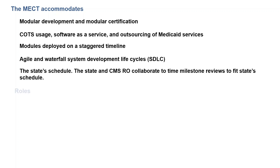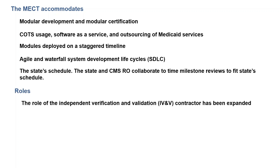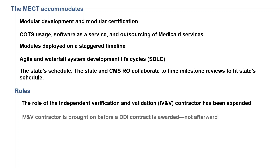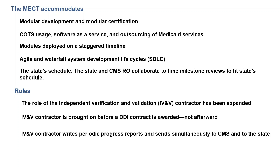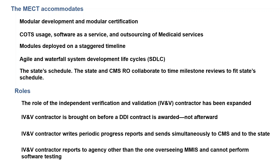Another significant change is the expansion of the independent verification and validation contractor role. The IV&V contractor is brought on before a DDI contract is awarded, not afterward. The IV&V contractor will assess progress toward certification using the updated certification checklist. It then prepares reports that it sends to the state and to CMS simultaneously. In order to be truly independent, the IV&V contractor must report to a state agency other than the one managing the MMIS project, and it may not perform software testing.